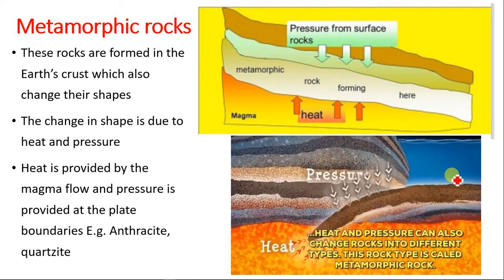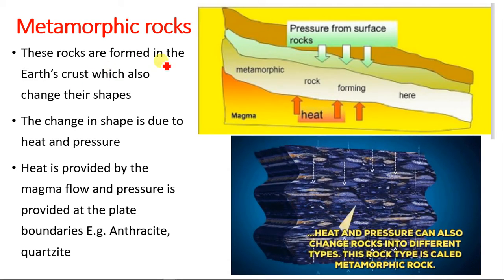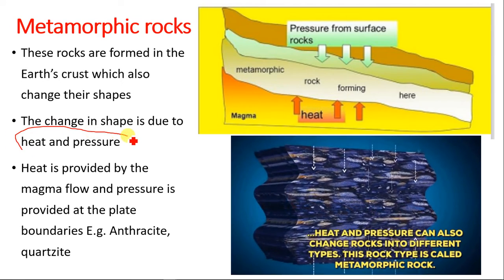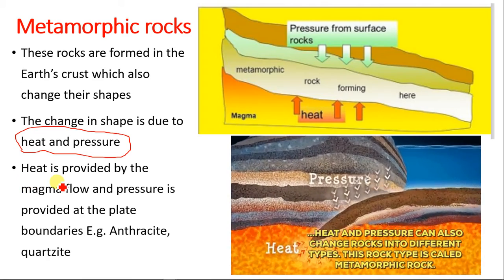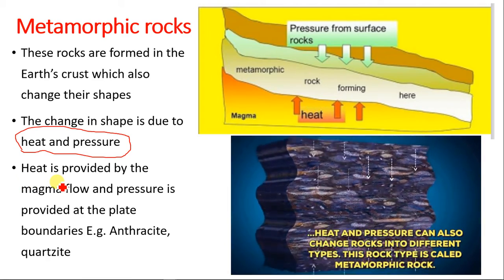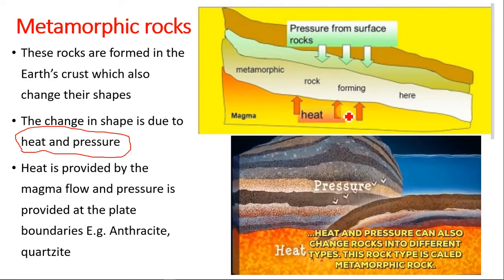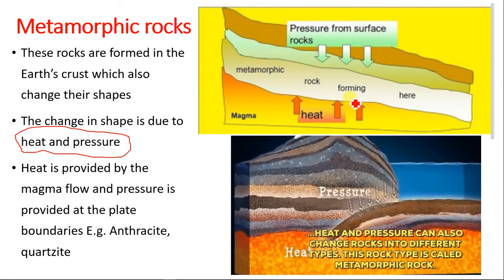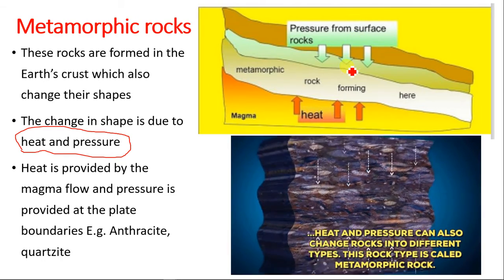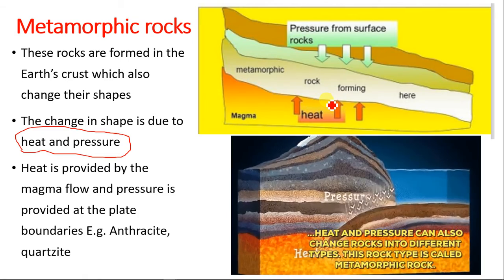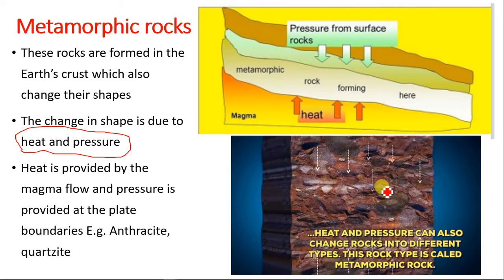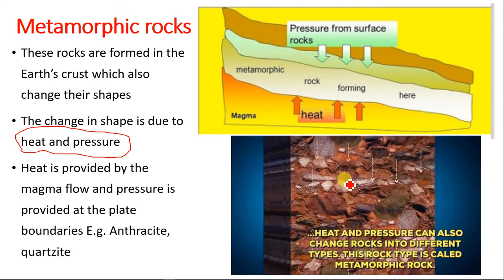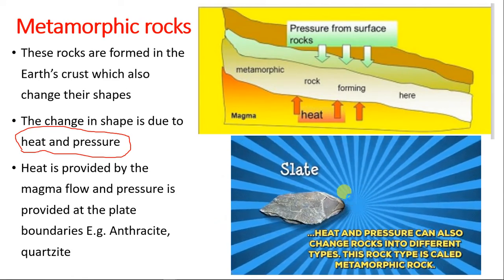Metamorphic rocks are formed in the earth's crust, where rocks change their shape due to heat and pressure. Heat is provided by magma flow and pressure is provided at the plate boundaries. Heat from the magma chamber heats up the surrounding rocks, changing their crystal shape. Pressure from the sediment above compresses the rock, changing its form to create a metamorphic rock.